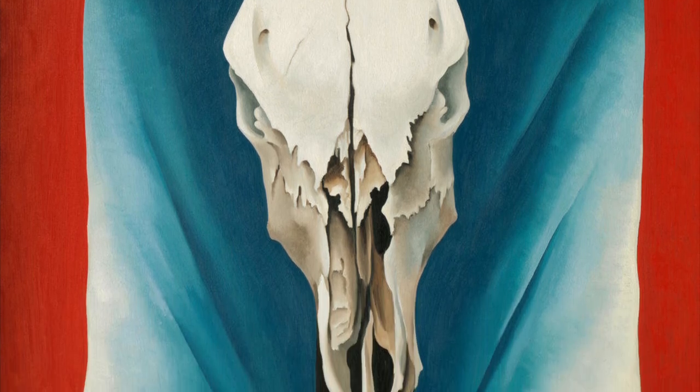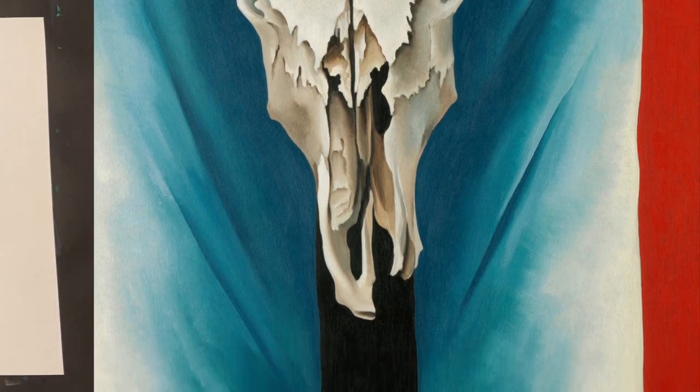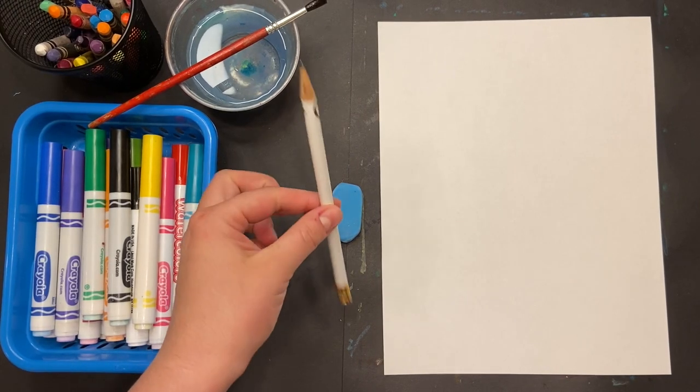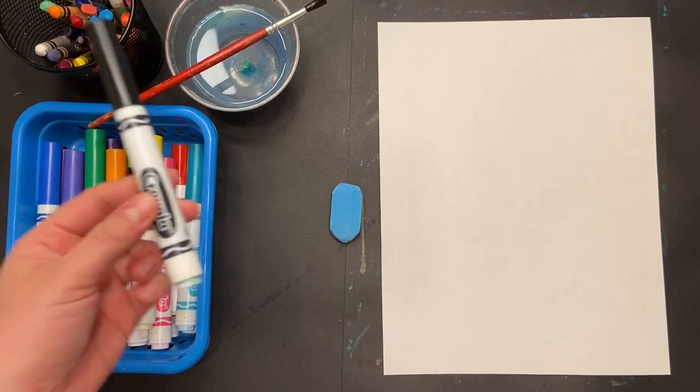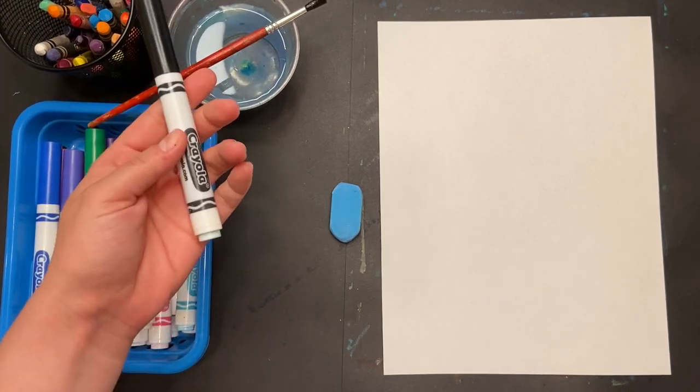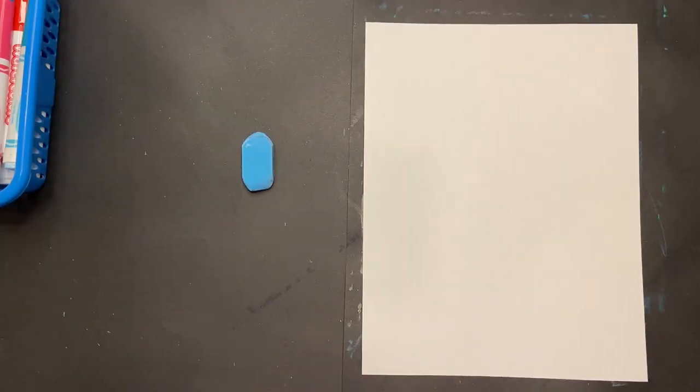You will create your very own Georgia O'Keeffe-inspired cow skull. For this project, I need a pencil, an eraser, and then a black marker that can be spread by water, so not a Sharpie, as well as crayons and a piece of paper.